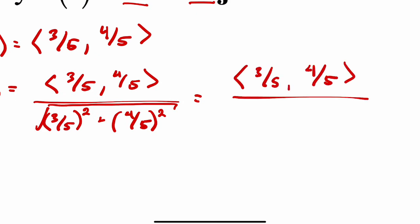And I get 3/5 comma 4/5, 3 squared is 9, 5 squared is 25, 4 squared is 16, 5 squared is 25.